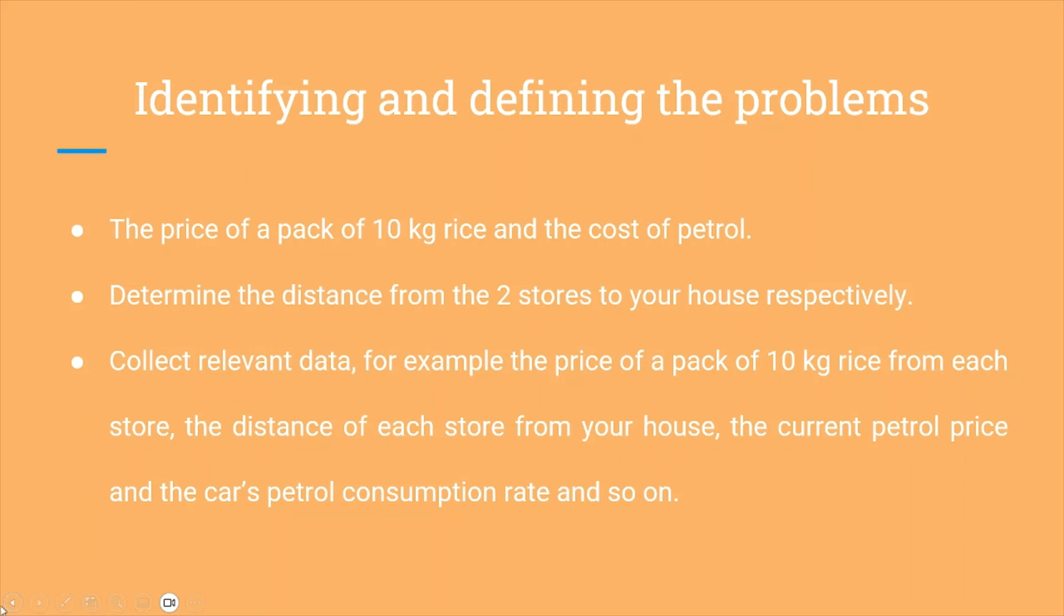We identify and define the problems. So one pack of rice and the cost of the petrol are the variables that they will be using and the distance from two stores to your house respectively. We can collect the relevant data such as the price of the rice from each of the stores, the distance from the store to your house and the current petrol price and the petrol consumption rate which are being kept constant.